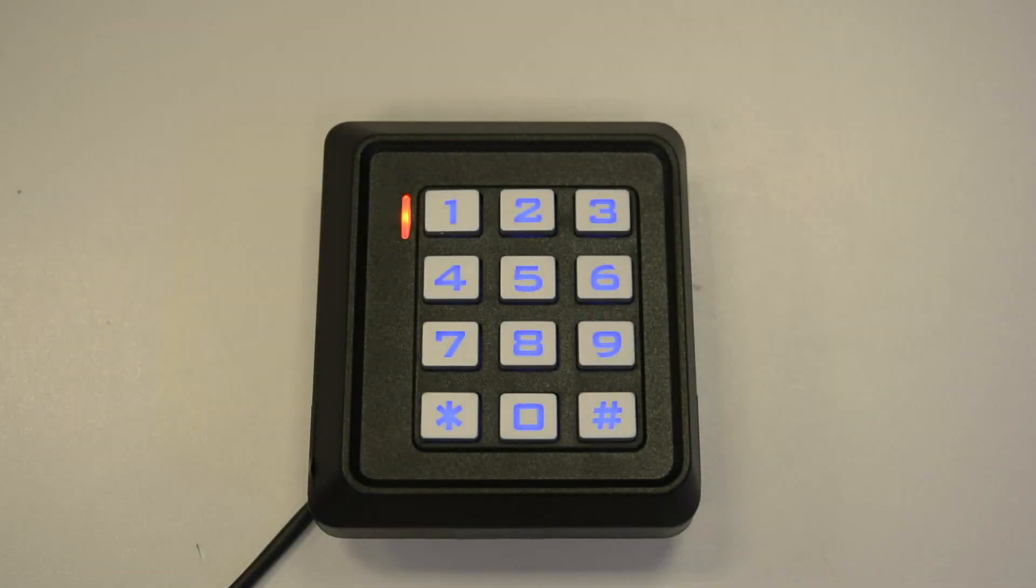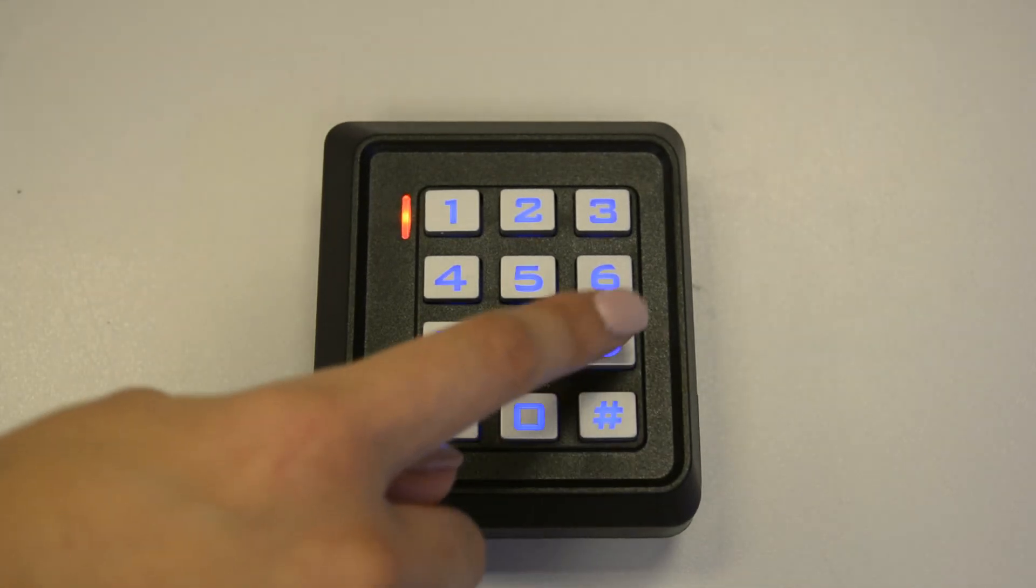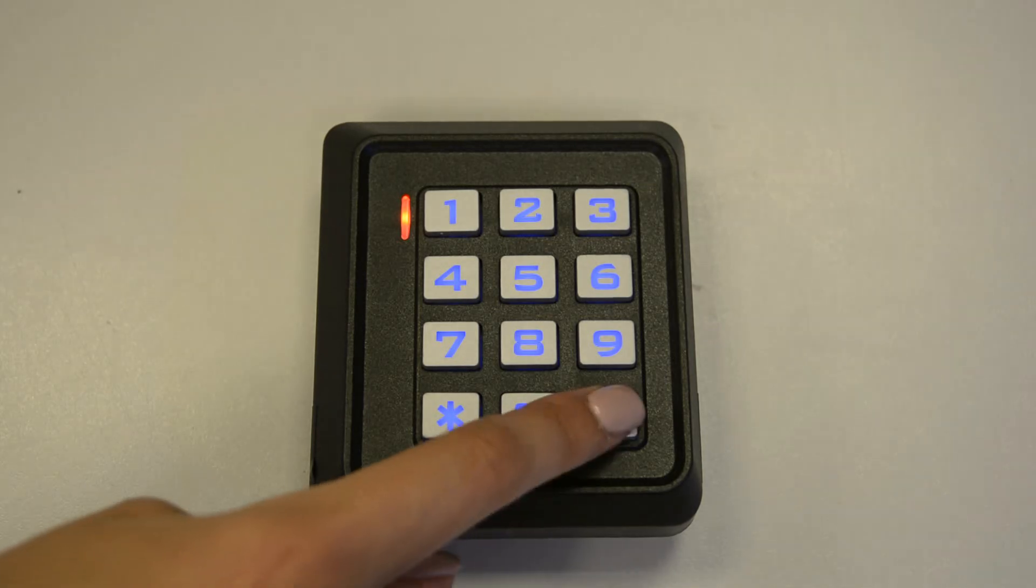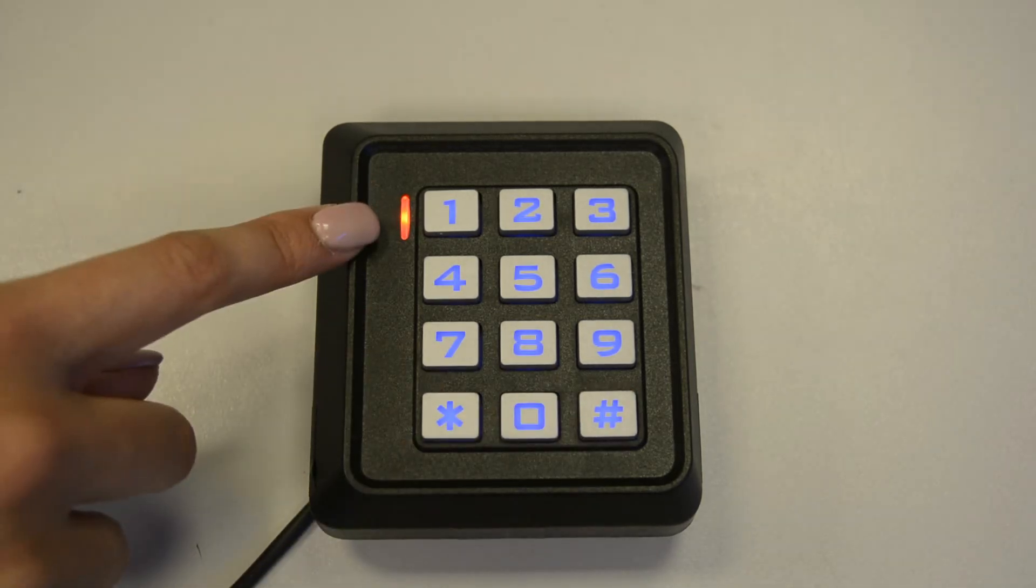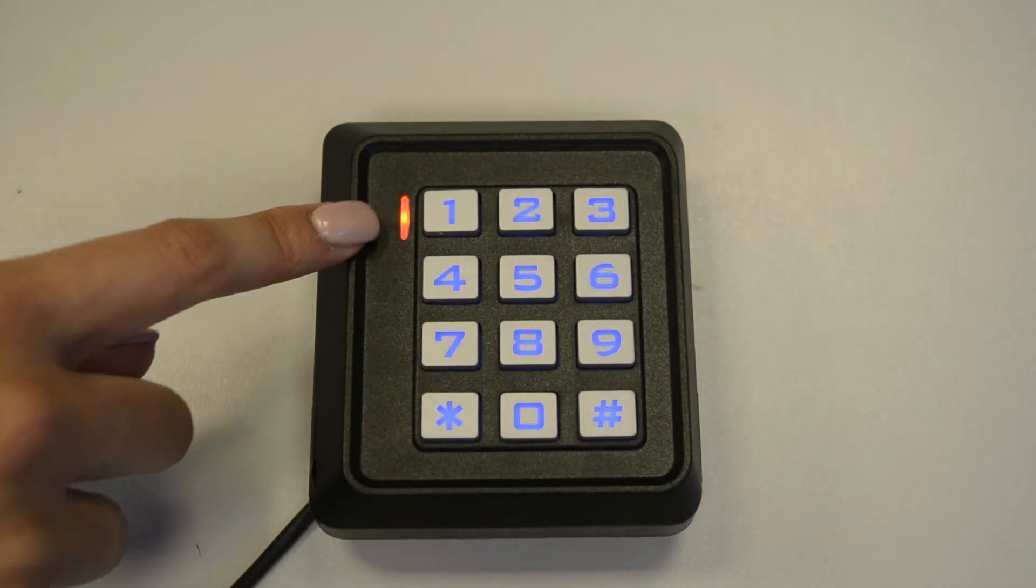To begin with, enter programming mode with your master code. I'll be using the default master code which is star 999999 and then press hash to confirm, and the solid red LED will indicate you've now entered programming mode.